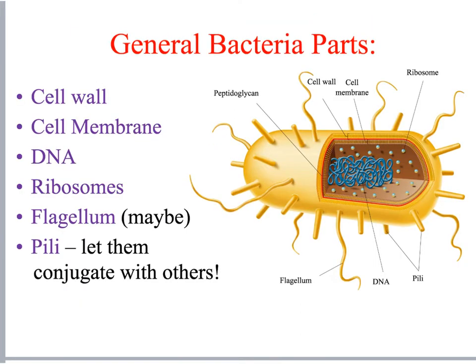Some basic bacteria parts: cell wall like plants and fungi, cell membrane, and DNA — however, that DNA is not housed in a nucleus like ours. They don't have membrane-bound organelles, but they do have ribosomes that make proteins. They have structures that help some of them move, which are flagella, and pili, which they use to connect with other bacteria via conjugation.